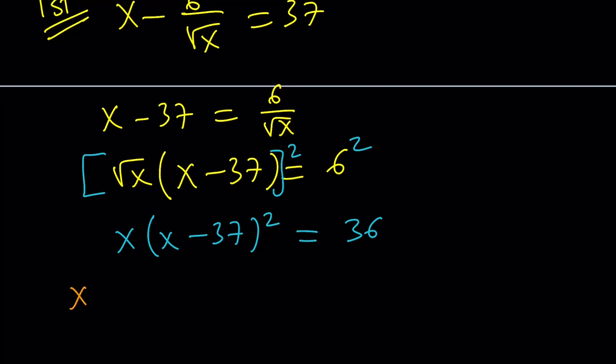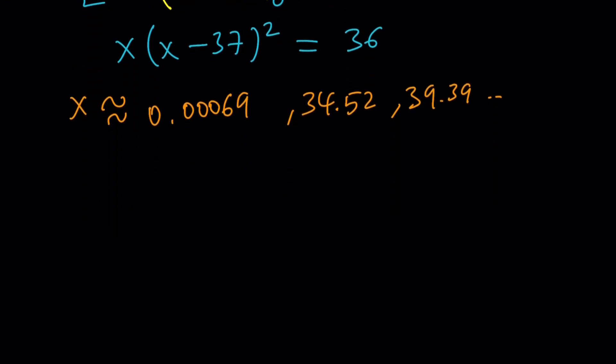The x values that you find from here, they're pretty much going to look like this. 0.00069 or 34.52 or 39.39. Something like that. Approximately. So those are the values. But again, we need to make sure we plug them in and check. Uh-oh. This is not good. We don't want to use this method because it's not very elegant.